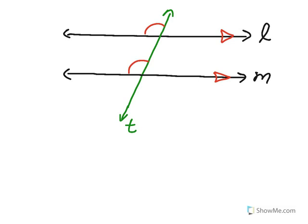And then of course the vertical angles to those will also be congruent to each other. So all four of those red angles will be congruent.